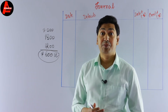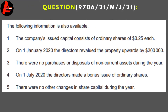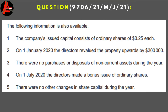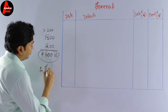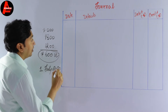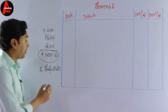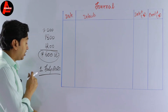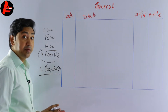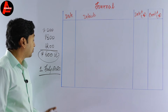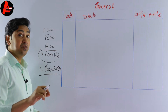Before determining which fund is used, we should know when the company issued the bonus shares. Looking at adjustment number 4: on 1st July 2020 the directors made a bonus share issue of ordinary shares. The financial year ends on 31st December 2020, but the company issued bonus shares on 1st July 2020 — in the middle of the financial year. That means the 2020 figures are not relevant to calculate the bonus share issue; the company issued bonus shares based on the fund figures given in 2019.